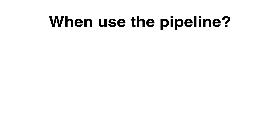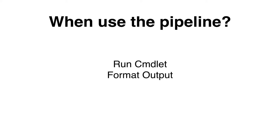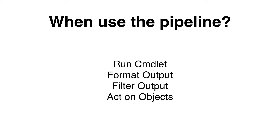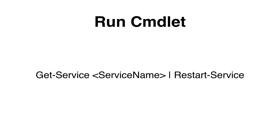When should we use the pipeline? We can use the pipeline to run multiple commands. We can also format the output of a command in the way we would like it to be. We can filter the output and we can act on an object — do something with the object or its output. In this example, we are using the commandlet get-service to create an object, then using the pipe to run a second commandlet to restart the service object we've just specified.